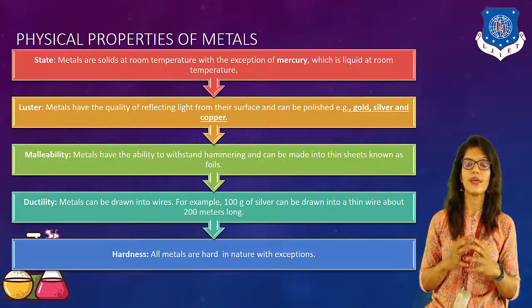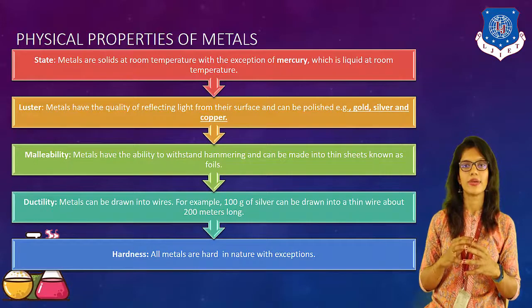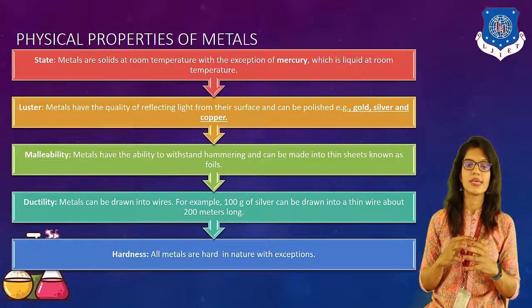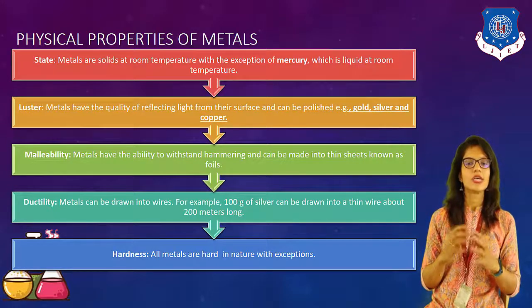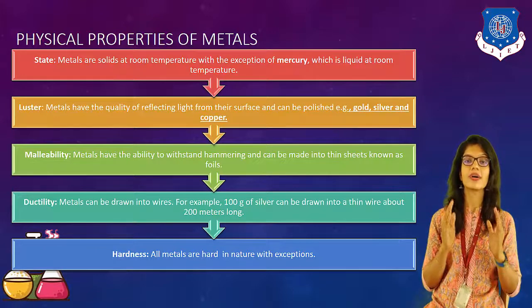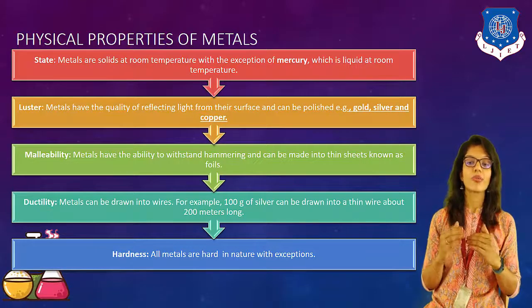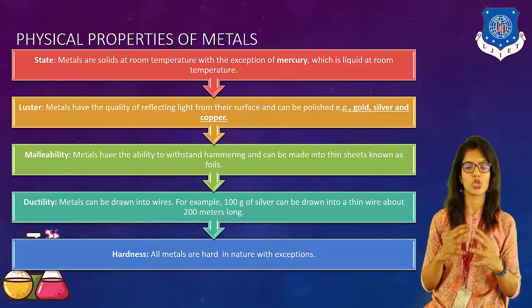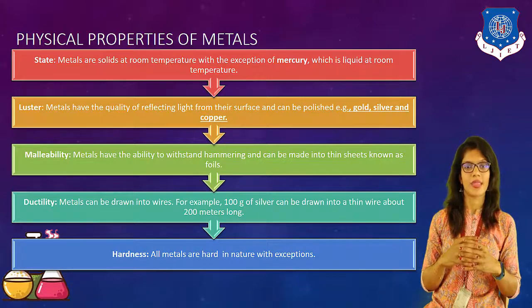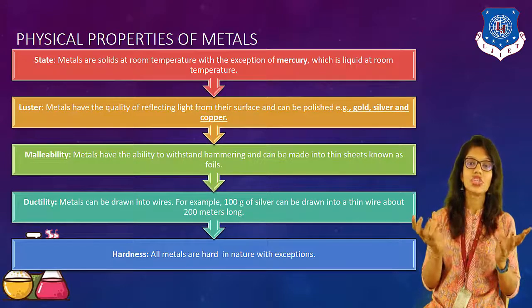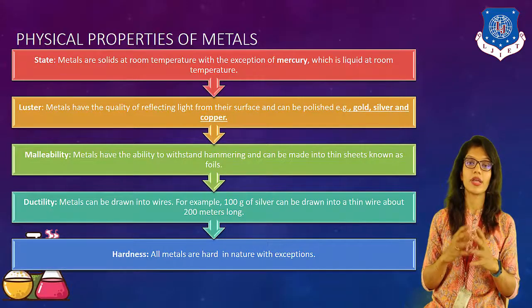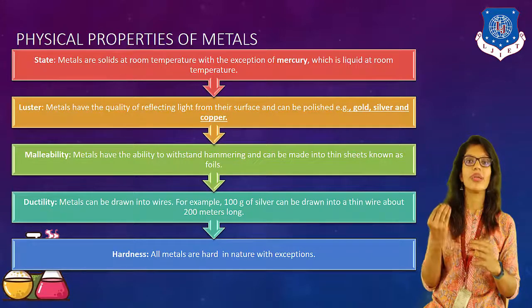Metals are generally solid at room temperature, with the exception of mercury, because mercury is liquid at room temperature. The second property is lusterness. Metals have the quality of reflecting the light from their surface and can be polished. For example, gold, silver and copper — we can polish them, we can shine them. In any form or in any size, they show us lusterness.